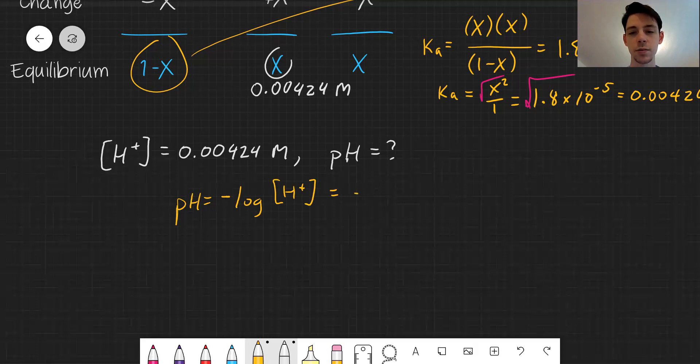Or negative log of 0.00424. pH comes out to be 2.37.